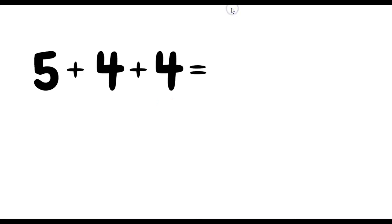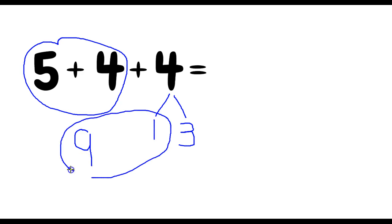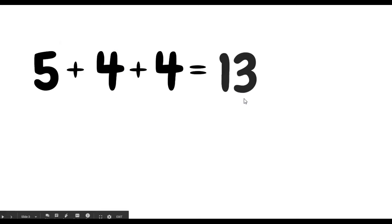Well, what if I wanted to try a different strategy? What if I wanted to do 5 plus 4 first? Because that's a friendly fact for me and I know 5 plus 4 is 9. And then I just need one more here because I know 9 plus 1 makes a 10. And I just have to add 3 more, right? I still end up getting what? 13. Excellent.